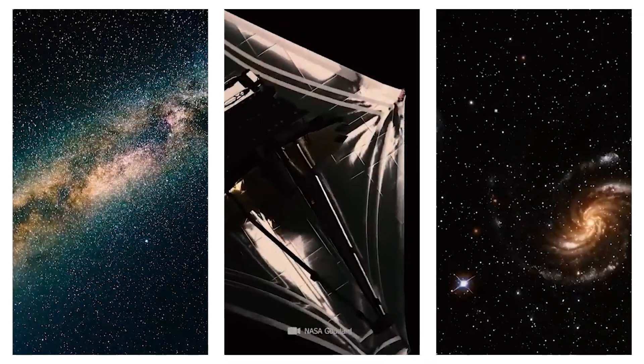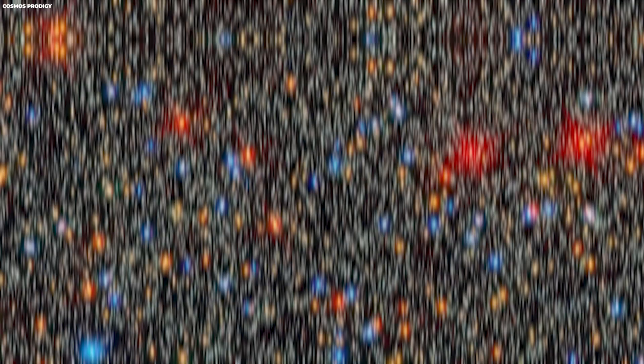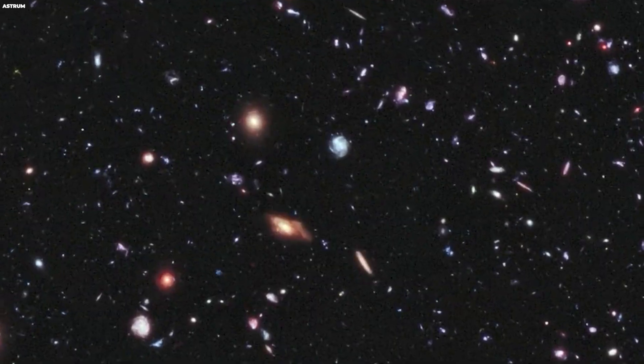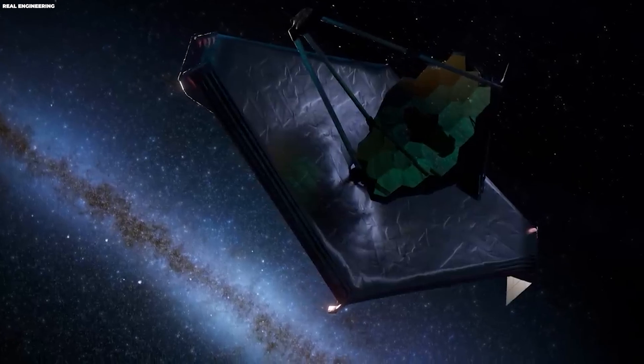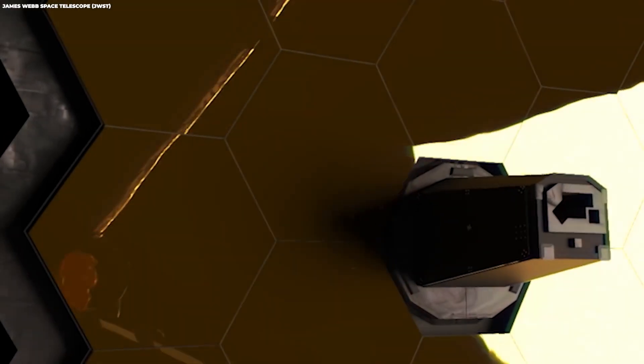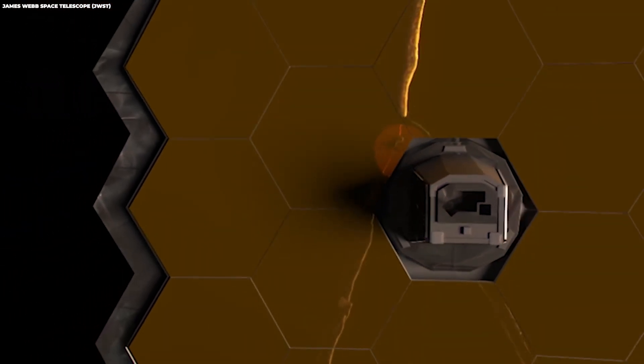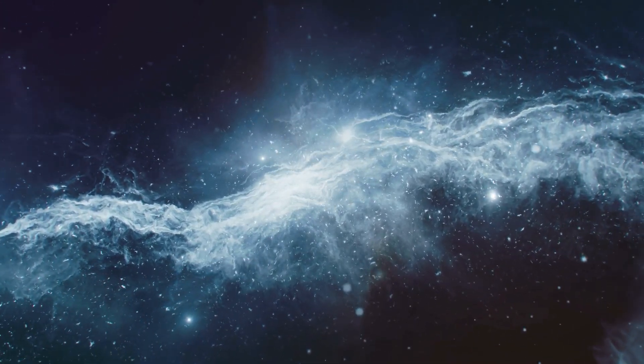If the issue revolves around the visibility of these stars, it may not be a fault of the JWST but rather a characteristic of the stars themselves. Perhaps the light emitted by these stars is no longer visible to the JWST due to changes in their conditions or other astronomical factors. This perspective suggests that the JWST, despite its advanced technology, might face challenges in capturing the light signals from these specific stars.